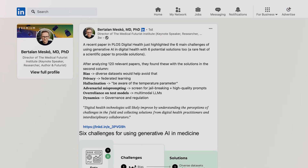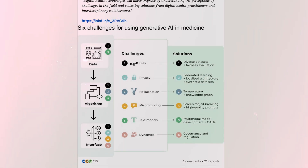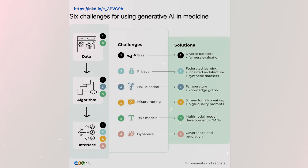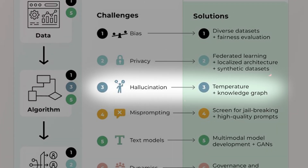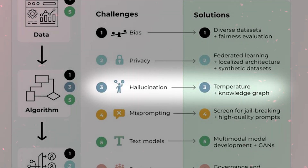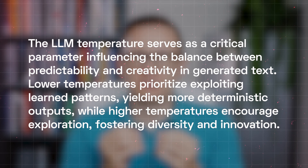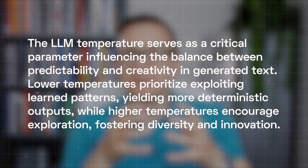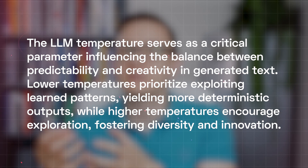A new study came out recently in PLOS Digital Health about the six major challenges in using generative AI for digital health. One of these challenges was hallucinations, and a potential solution proposed by the authors was temperature control. Temperature control is an exciting concept in large language models.